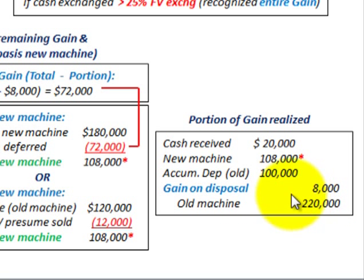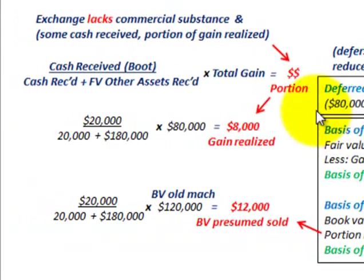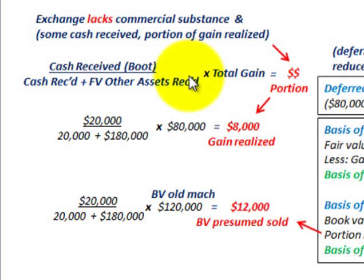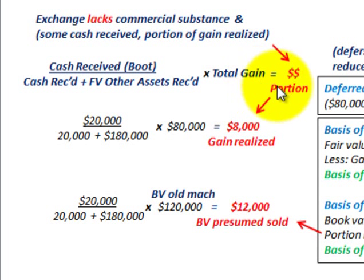That takes care of our example. Looking at it one more time: this is where the exchange lacks commercial substance, but because some cash is received, a portion of the gain has to be realized. These are our equations and how we determine our portion of the gain that has to be realized.